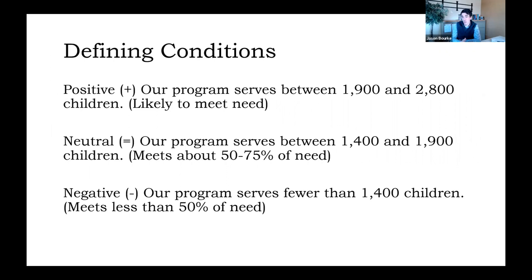We could set 1,900 as a minimum and 2,800 as a maximum to establish a range. A positive condition is one in which we're likely to meet the need of students who are hungry over the summer — so if our program serves between 1,900 and 2,800 children, we can pretty safely say we are very highly likely to meet that need. A neutral condition might be anywhere between 50% and 75% of need. A negative condition would suggest we meet less than 50% of need — meaning fewer than half of those children are being fed through our program over the summer. By defining these conditions at the outset, when we finally get that number, we know exactly what it means.